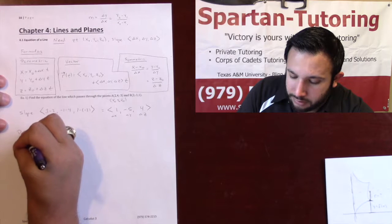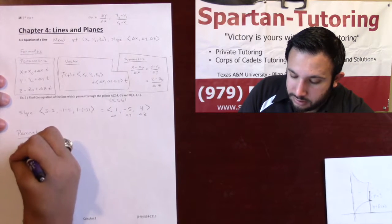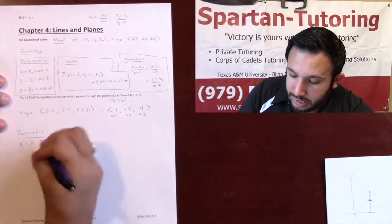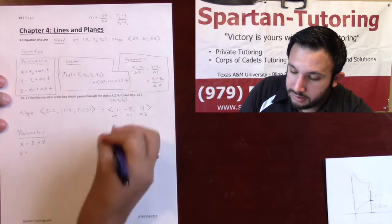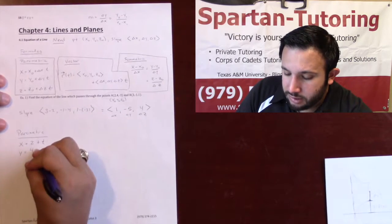So, they want it as a parametric equation. Your final answer is going to be x equals x naught, 2, plus delta x times t, so just plus 1t. y equals y naught, that's 4, plus delta y times t, that's going to be minus 5t.